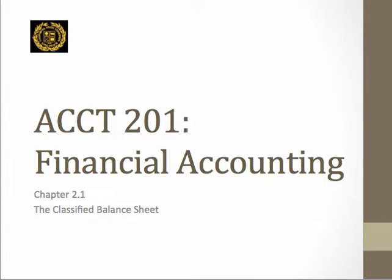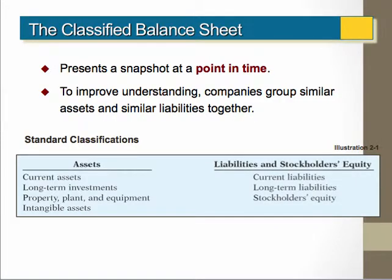So now let's take a look at the classified balance sheet. Remember, the classified balance sheet is one of four financial statements that we must create under generally accepted accounting principles when we're providing financial information to stakeholders. The classified balance sheet is a snapshot of the financial condition of the company at a specific point in time. That point in time needs to coincide with the ending date of the income statement and the statement of retained earnings.